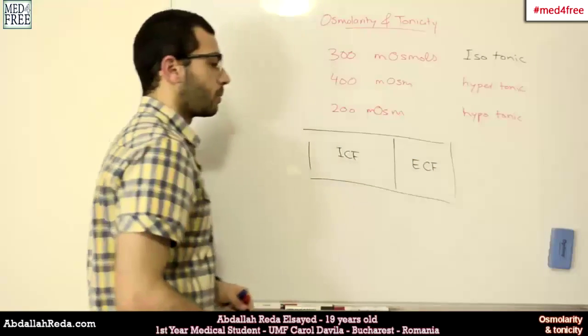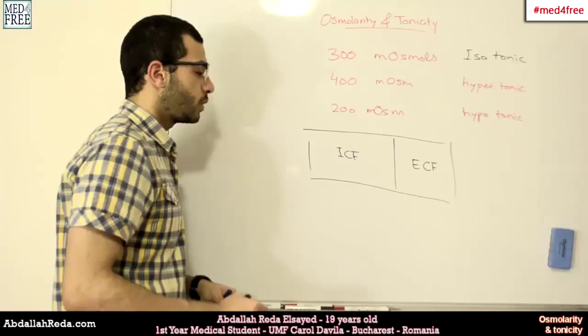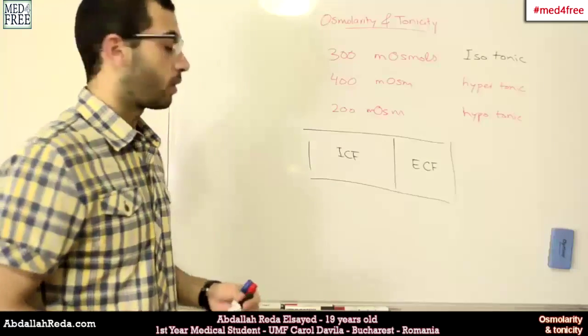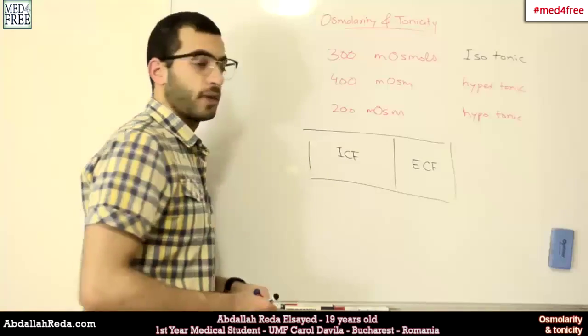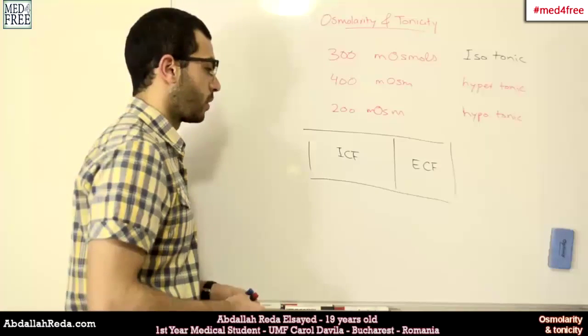We have the particles that are found normally between two cells as the sodium, as we mentioned. Sodium is a very effective particle that affects the process of osmosis.